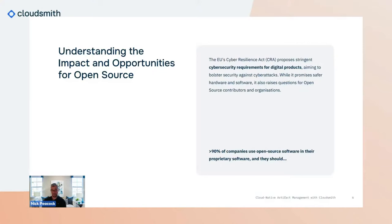For projects with fewer maintainers and contributors it's really hard to ensure that vulnerabilities aren't introduced, maliciously or otherwise. That was addressed — there was lots of lobbying from many organizations and the CRA was redrafted. Open source project maintainers are now exempt. But as a private or public company that builds software and distributes it in the European Union, you are going to be responsible for every line of code and every bit and byte in your software.